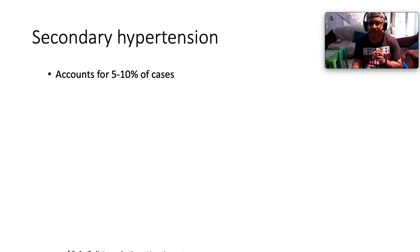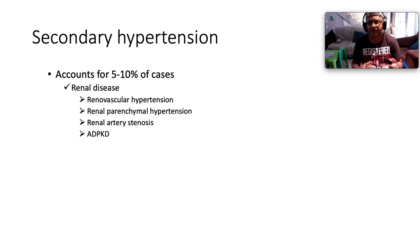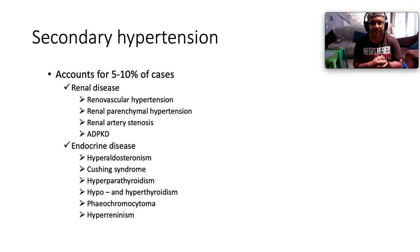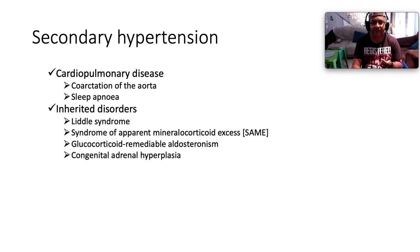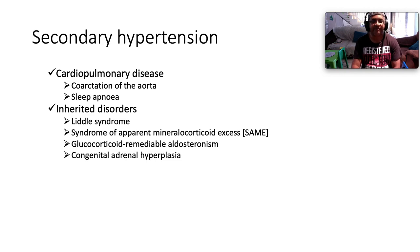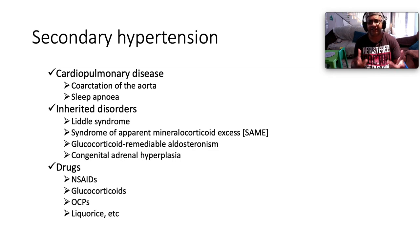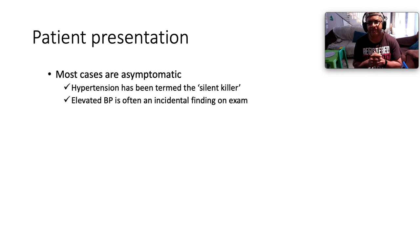Secondary hypertension accounts for approximately 5 to 10 percent of cases. Renal causes include renal vascular hypertension, renal parenchymal hypertension, renal atherosclerosis, and ADPKD. Endocrine causes include hyperaldosteronism, Cushing's syndrome, pheochromocytoma, hyperparathyroidism, hypo- and hyperthyroidism, and hyperreninism. Cardiopulmonary causes include coarctation of the aorta and obstructive sleep apnea. Inherited disorders include Liddle syndrome, syndrome of apparent mineralocorticoid excess, glucocorticoid-remediable aldosteronism, and congenital adrenal hyperplasia. Drugs — including NSAIDs, glucocorticoids, oral contraceptive pills, and licorice — also contribute.